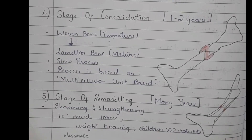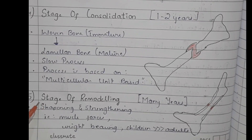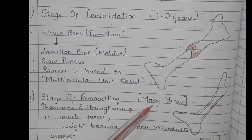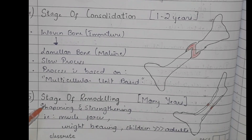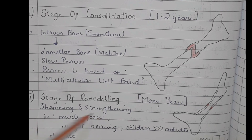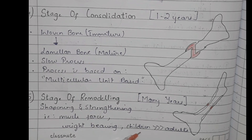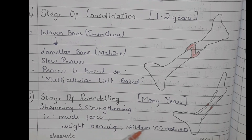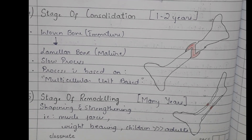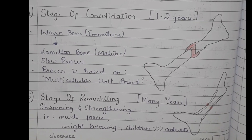The final stage is remodeling, which takes many years. It helps in shaping and strengthening the bone through muscle forces or weight bearing. The stage of remodeling is faster in children compared to adults. These were the five stages of fracture healing.